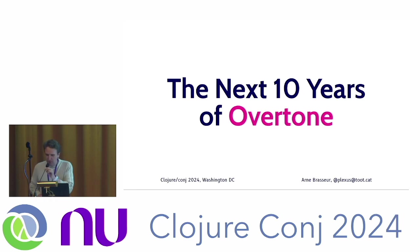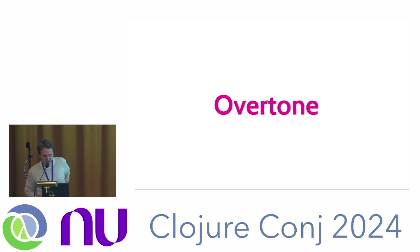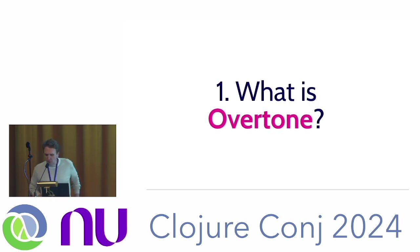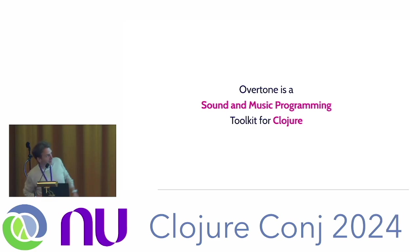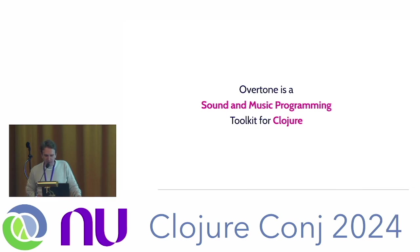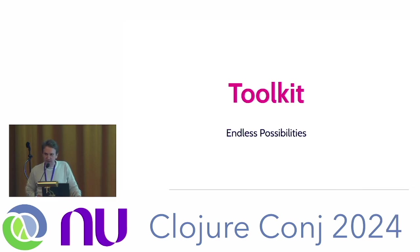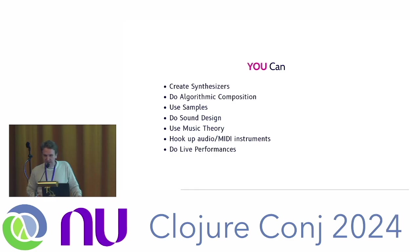So what you saw was Overtone. Let's talk about Overtone. What is Overtone? As you can imagine from seeing this, Overtone is a sound and music programming toolkit for Clojure. The word I want to stress here is toolkit — it's really just a bunch of building blocks that you can do lots of different things with. You don't have to make Dermon bass like I did. You can make synthesizers. You can do algorithmic composition. You can do stuff with samples. You can do sound design.